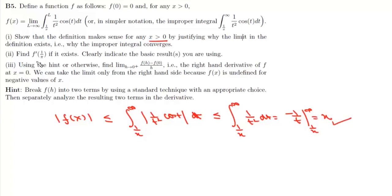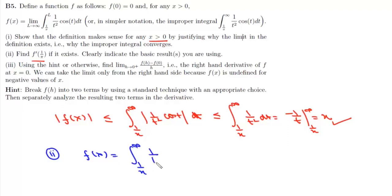The second part asks us to find f'(1/π), if it exists, and to clearly indicate the basic results we are using. We are given f(x) = ∫(1/x to ∞) (1/t²)cos(t) dt.